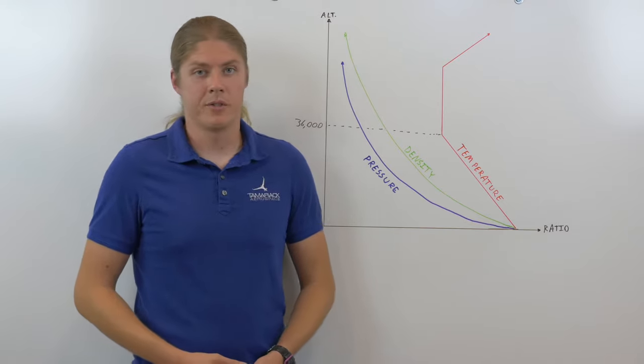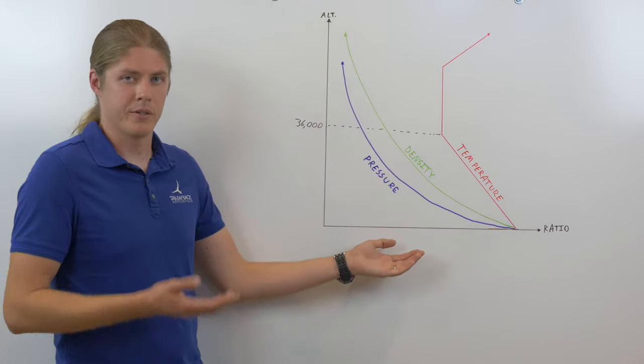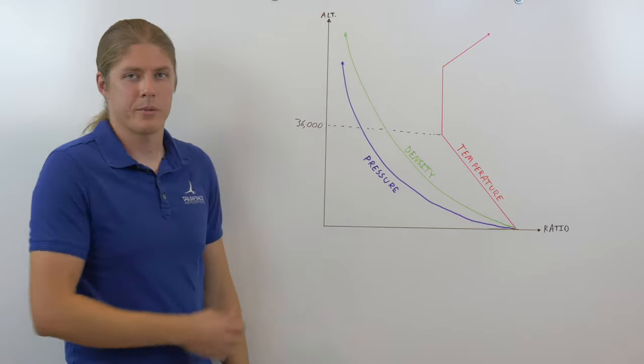The International Standard Atmosphere looks something like this. On the x-axis, we have the ratio of value at altitude to value at sea level, and on the y-axis, we have altitude.